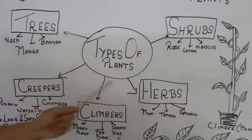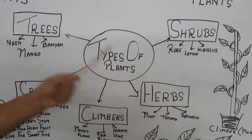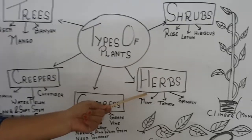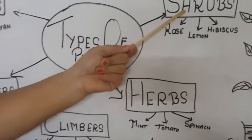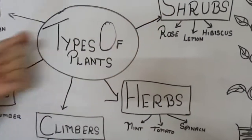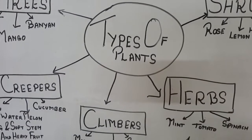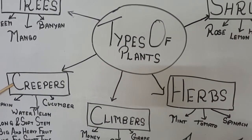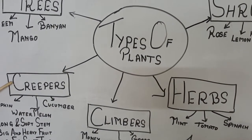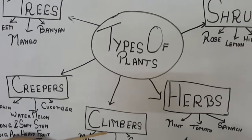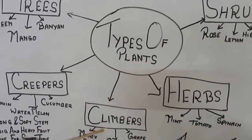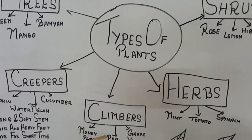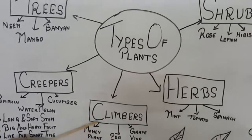When we talk about types of plants, we have herbs, which are very short plants. We have shrubs. Then we have trees, very tall trees. We have creepers as well, which keep on creeping on the ground. Then we have climbers, which need some support for climbing up.